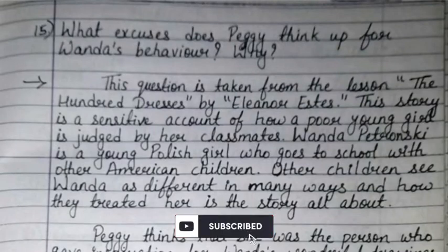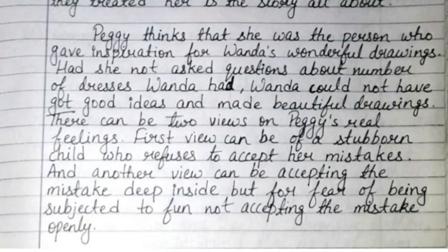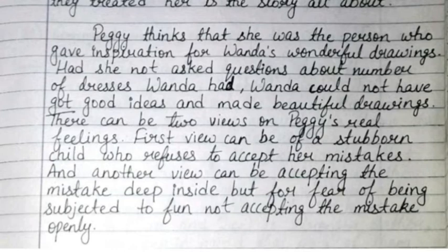Question fifteen: what excuses does Peggy think up for Wanda's behavior and why? This is from 'The Hundred Dresses' by Eleanor Estes, about how a poor Polish girl Wanda Petronsky is judged by her American classmates. Peggy thinks she was the one who inspired Wanda's wonderful drawings — that had she not asked questions about Wanda's dresses, Wanda could not have made beautiful drawings. There are two views: either Peggy is a stubborn child refusing to accept her mistakes, or she accepts her mistake deep inside but fears being subjected to ridicule.